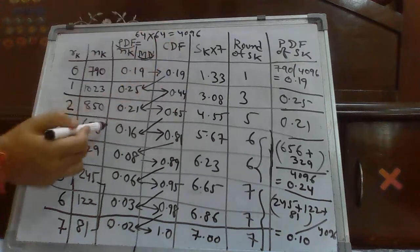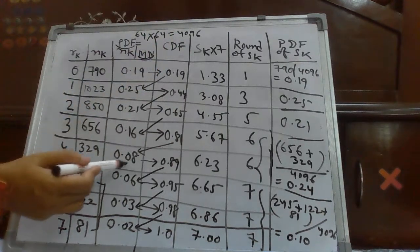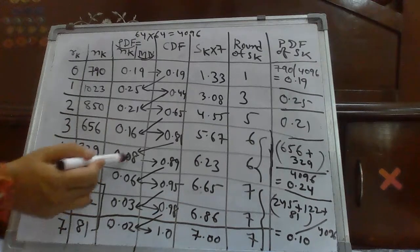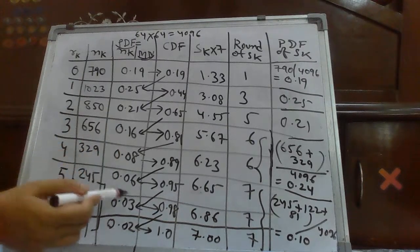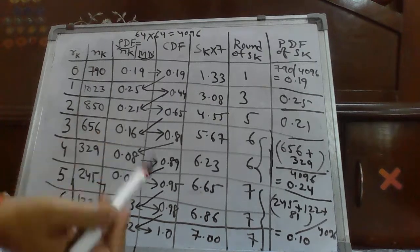For 850 divided by 4096, you will get 0.21. Similarly, 0.16. For K level 4, you will get this value, this value for 5, for 6, you will get 0.03 and for 7, you will get 0.02.